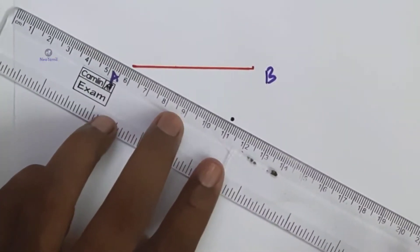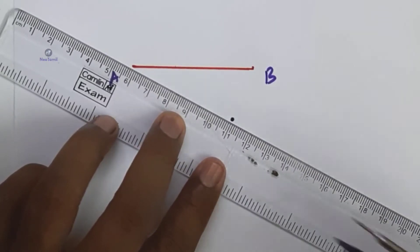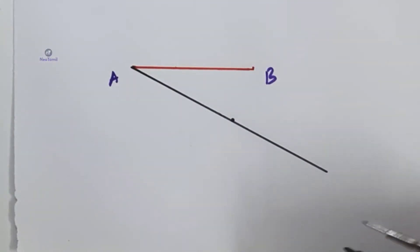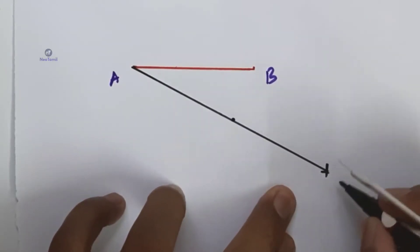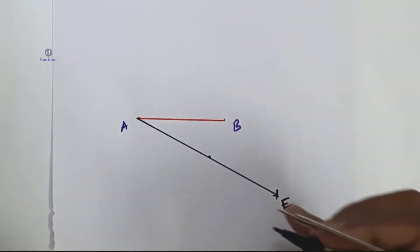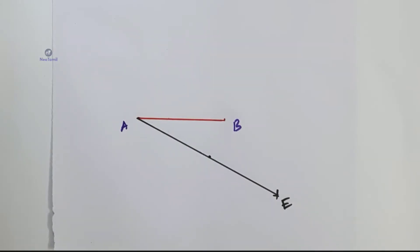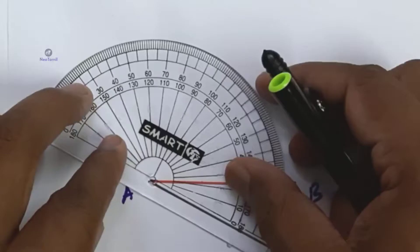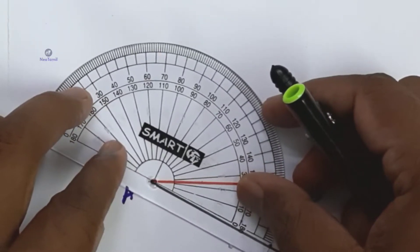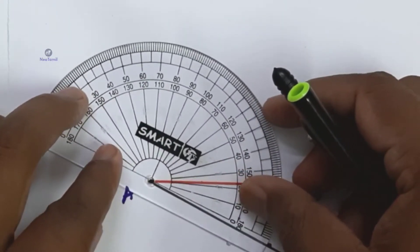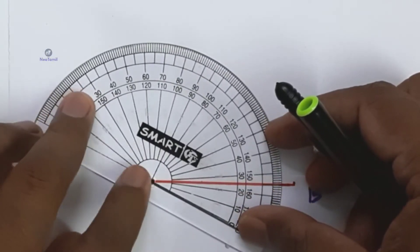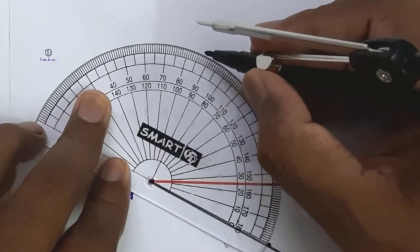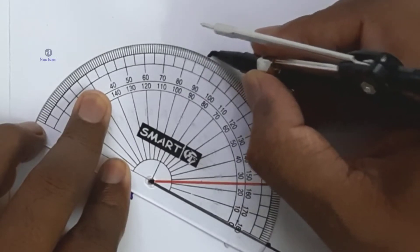Draw ray AE. Then at point A, draw another ray AF such that AF is perpendicular to AE. The angle EAF is equal to 90 degrees — mark exactly 90 degrees.